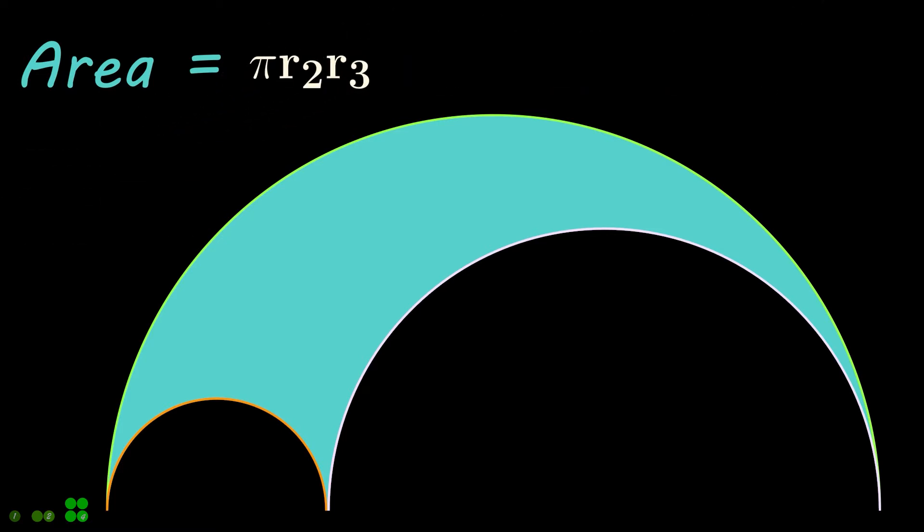So the area of the Arbelos equals pi times product of R2 and R3.